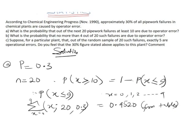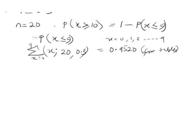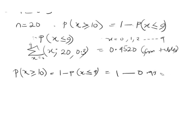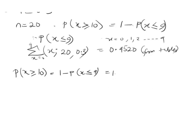So P(X ≤ 9) = 0.9520. Therefore, the probability of at least 10, which is P(X ≥ 10), equals 1 minus 0.9520, which gives us 0.0480. That is the answer for part A.